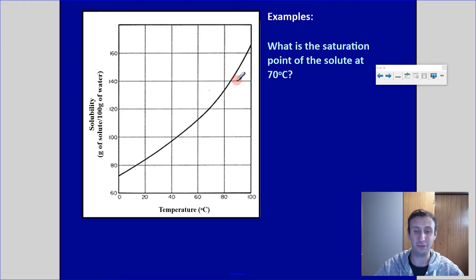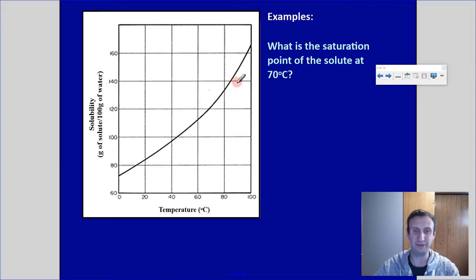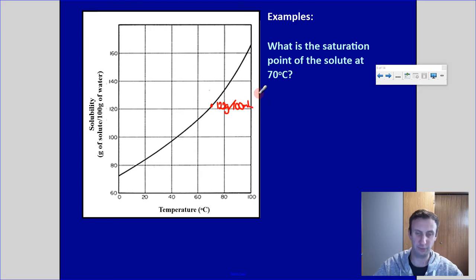Let's try 70 degrees Celsius. What is the saturation point of the solute at 70 degrees Celsius? If I go to about 70, I would read that right around 122 grams per 100 mils of solvent — just over 120.